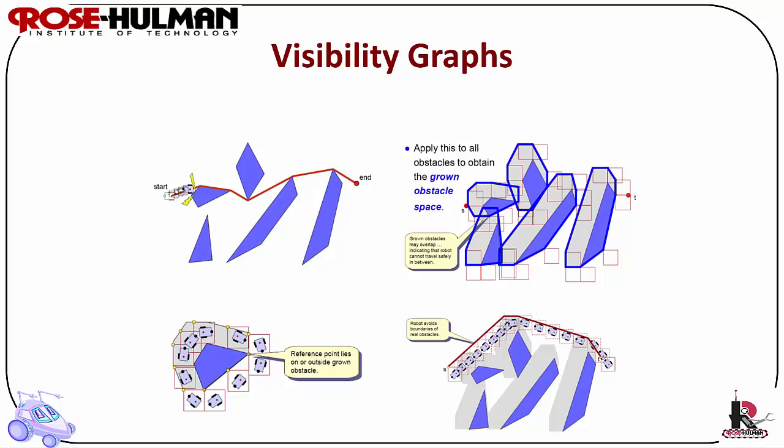One other solution would be to engage a local control strategy, such as obstacle avoidance, when a threshold is reached, and then return to the path once the obstacle is cleared.